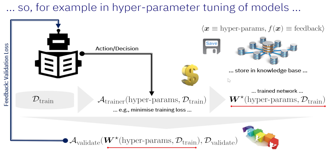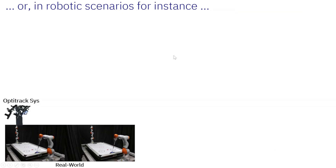We have described the application on hyperparameter tuning as an instance of Bayesian optimization, or budgeted expensive black box optimization. Now I will give an additional example on robotic tasks before we go into the application itself, or how to apply and use Bayesian optimization.